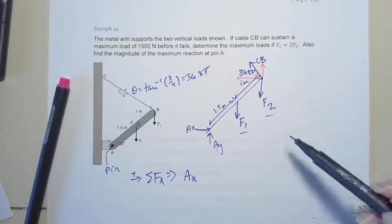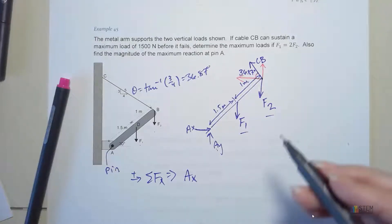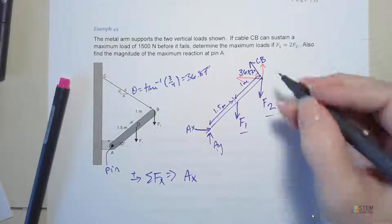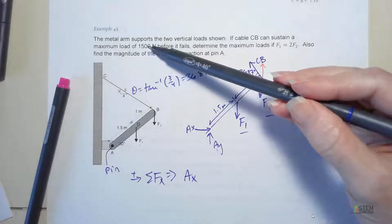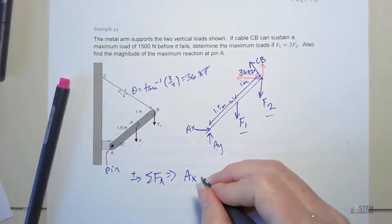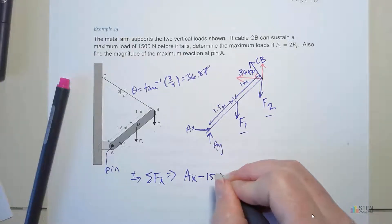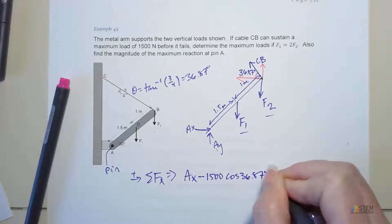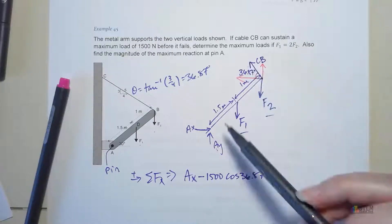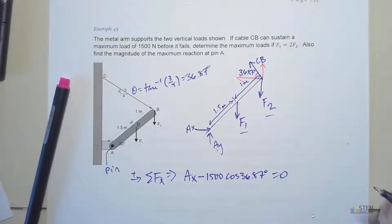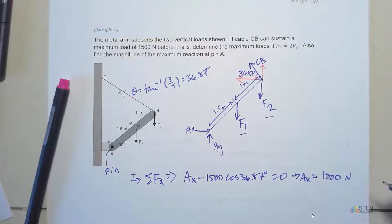Now that we have this, we can find our x component for CB. What do you think we should plug in here? Should we just leave it as CB? No, because we know the maximum load it can support, right? It's 1500. So instead of having this be an unknown, let's go ahead and put 1500 in there. Minus 1500 cosine 36.87. We can use that max value because we want to find the maximum loads. That's all we have for x, set that equal to 0. Notice Ax is your only unknown, so you can solve for Ax. We get 1200 newtons.